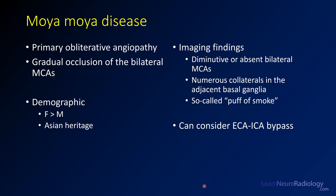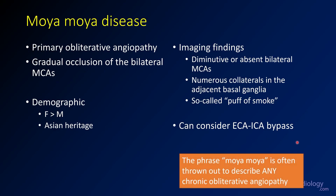This is a case of Moyamoya disease — an obliterative angiopathy with gradual occlusion of the bilateral MCAs and replacement with collaterals. Those collaterals in the basal ganglia produce the so-called 'puff of smoke' appearance on angiogram. This tends to occur in people of Asian heritage, particularly Asian women. These patients are candidates for treatment with external-to-internal carotid bypass. Note that the term Moyamoya is sometimes applied broadly to any obliterative angiopathy, but secondary causes like sickle cell or atherosclerosis represent Moyamoya syndrome, not the primary disease.